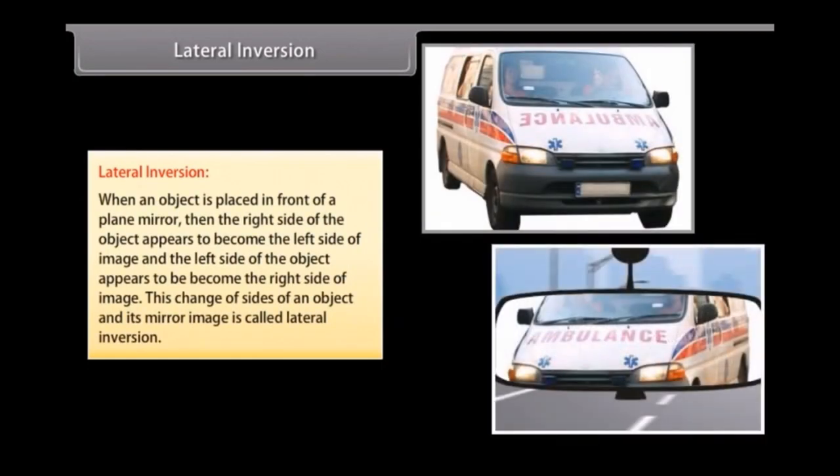When an object is placed in front of a plane mirror, the right side of the object appears to become the left side of image, and the left side of the object appears to become the right side of image. This change of sides of an object and its mirror image is called lateral inversion.